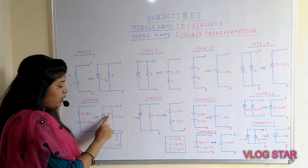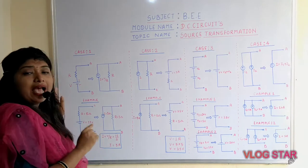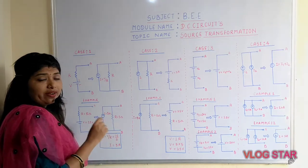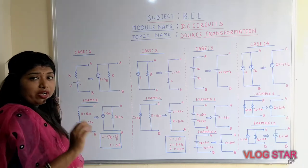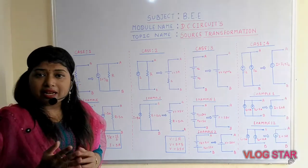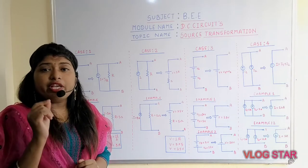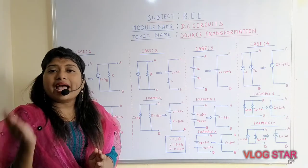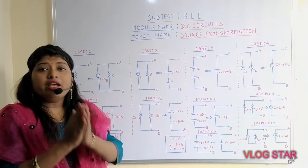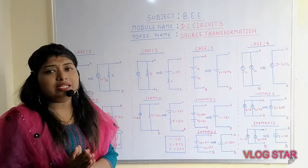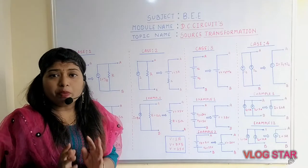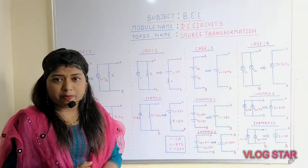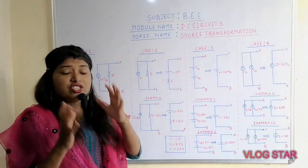Substituting into the equation, you get I = 3 ampere. So the current value of 3 ampere is parallel with the resistance of 5 ohms. That completes case number one: if the voltage source is in series with the resistance, it can be converted into a current source parallel with the same resistance.